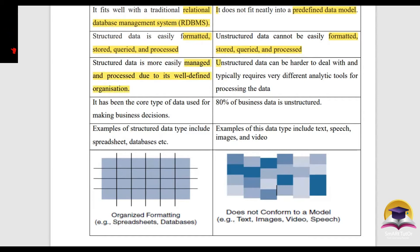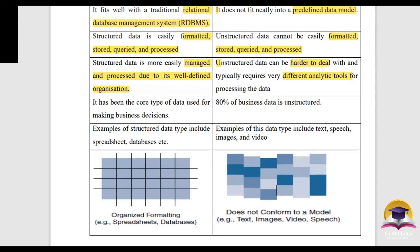Structured data can be managed and processed due to its well-defined organization. Unstructured data can be harder to deal with and typically requires very different analytical tools for processing the data. We have to use different analytical tools to manage and process unstructured data because it lacks that well-defined organization.